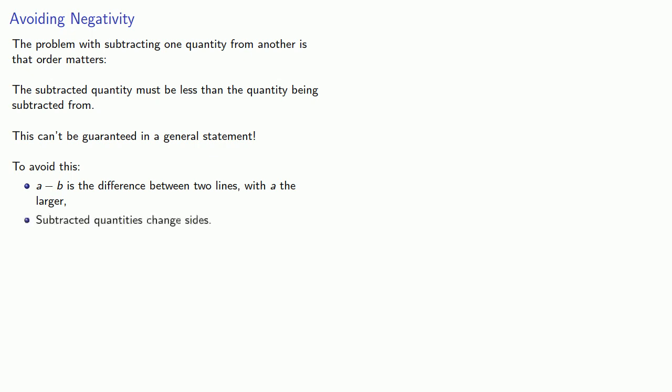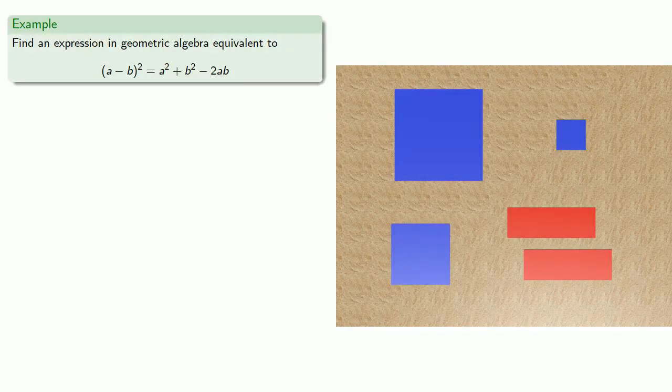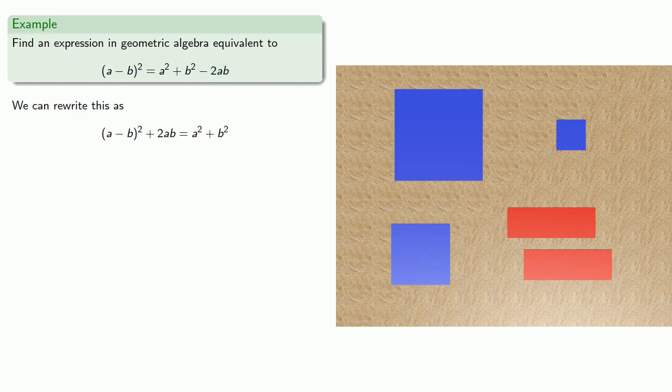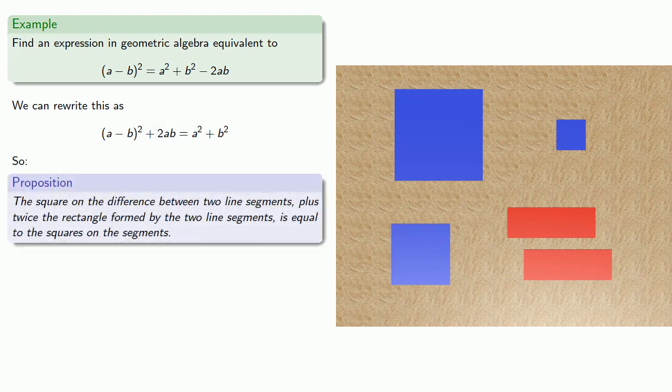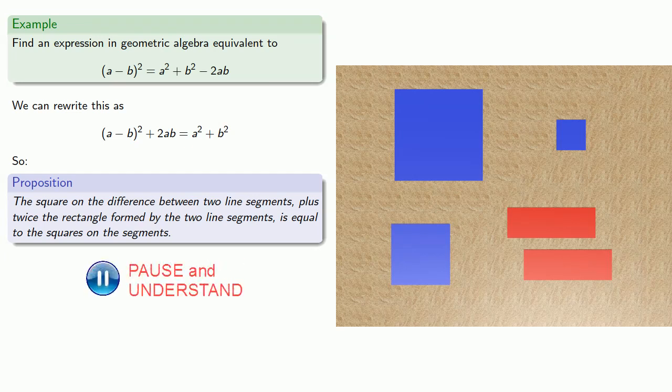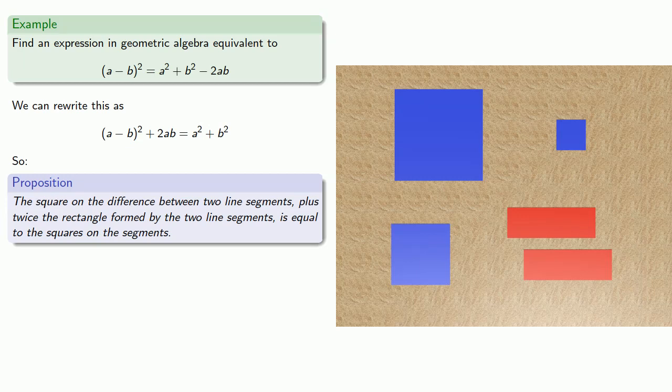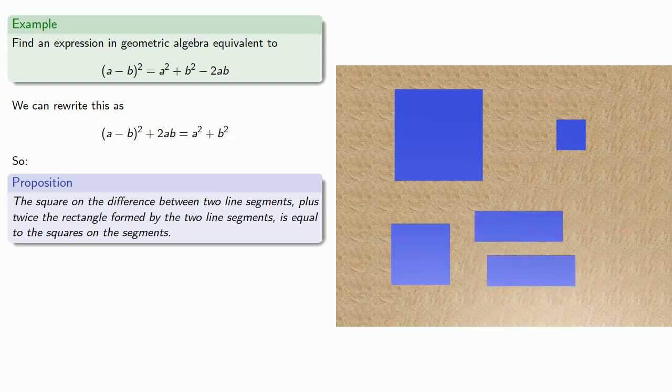As a second option, we can eliminate subtracted quantities entirely because subtracted quantities can change sides. For example, let's take a look at that expression again. And now I can move this subtracted quantity minus 2AB to the other side. And our wording becomes a lot easier. So we might say something like the following: The square on the difference between two line segments plus twice the rectangle formed by the two line segments is equal to the squares on the segments. And here it's a little bit easier to draw a picture. So we're going to take the square of the difference and add two rectangles. And because we're adding, it's easier to see how we fit these pieces together to get the big square and the small square.